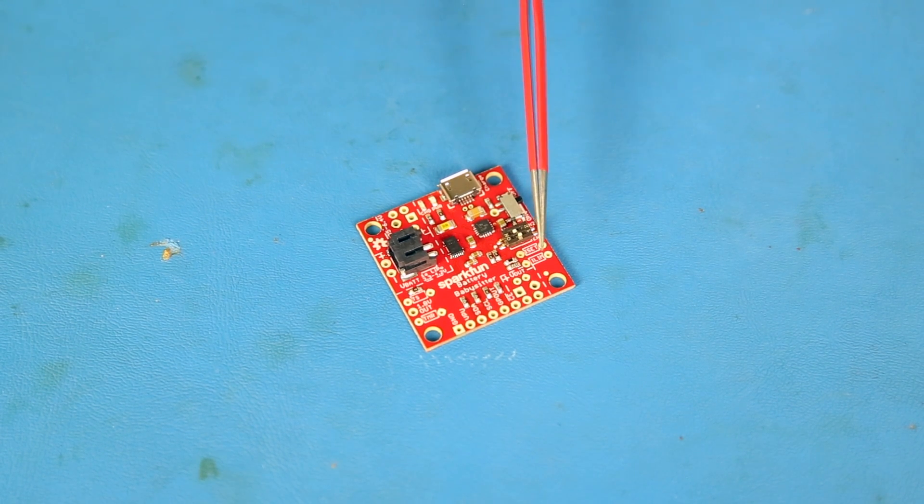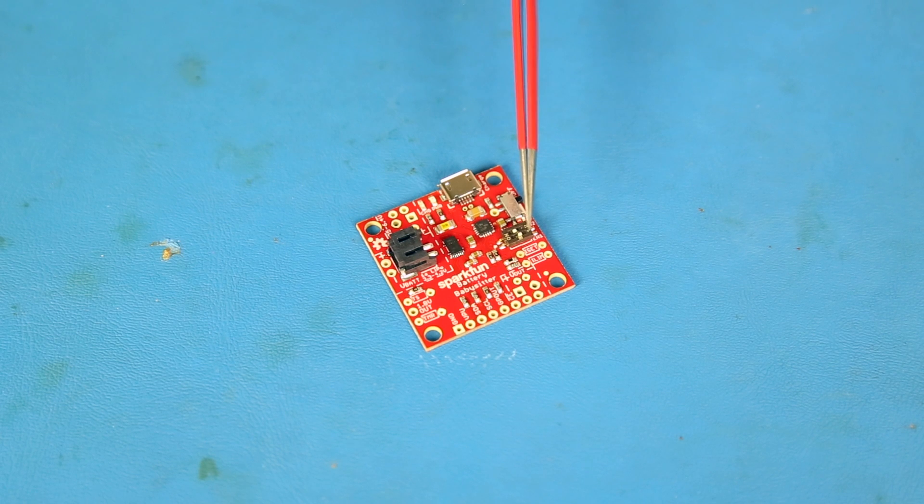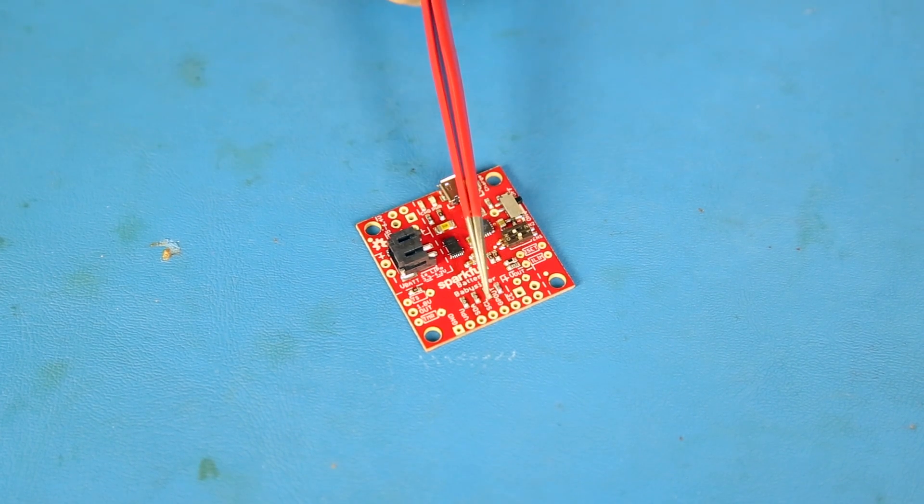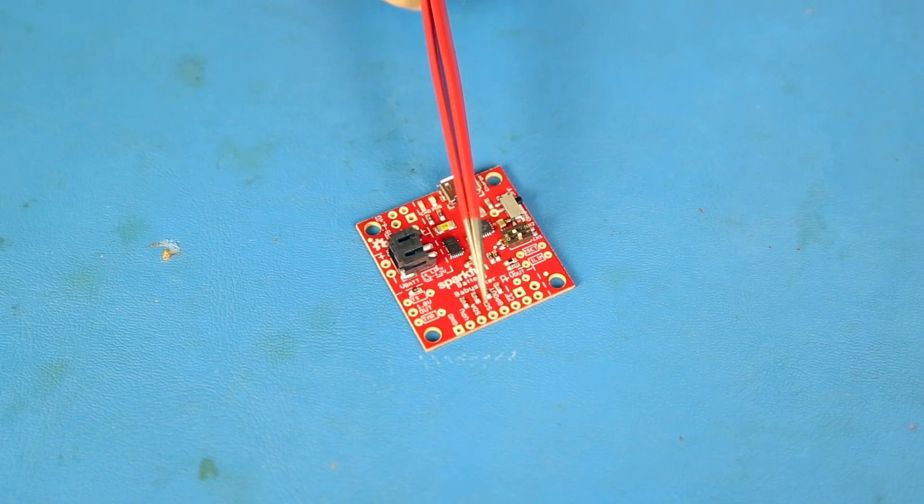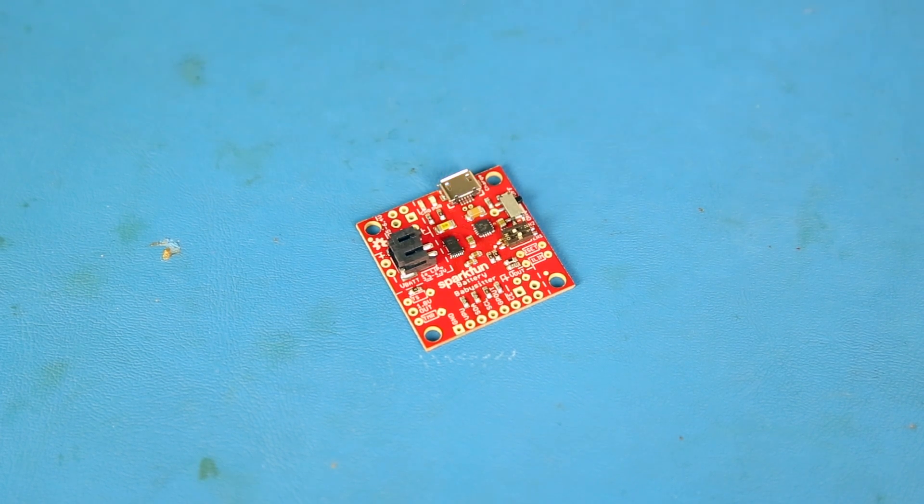There are some pads for soldering a screw terminal, JST connector, or .1 inch headers for voltage out, another set of through holes for an I2C connection that allows you to get battery information from the monitor part of the board.